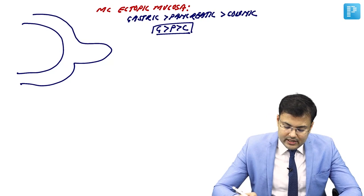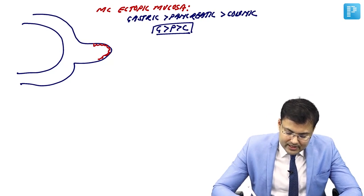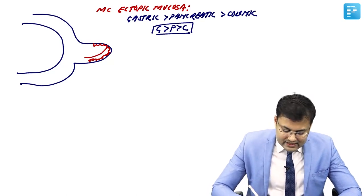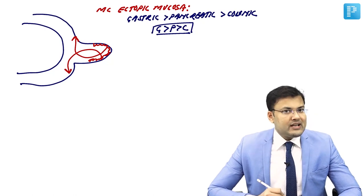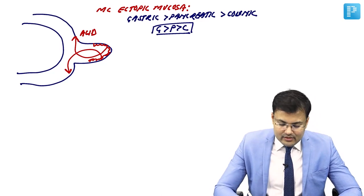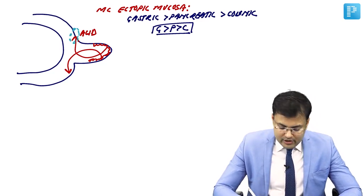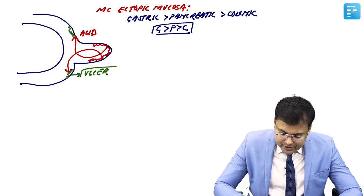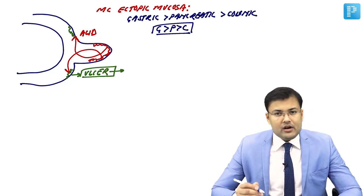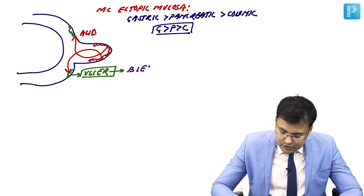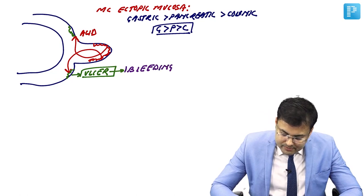If there is ectopic gastric mucosa, it is going to secrete acid. This acid works on the surrounding tissue and causes ulcer formation. Because of this ulcer, the most common symptom of Meckel's diverticulum is bleeding.